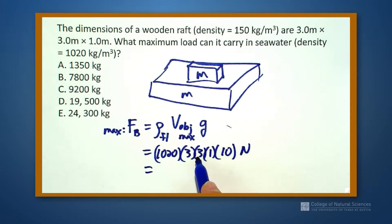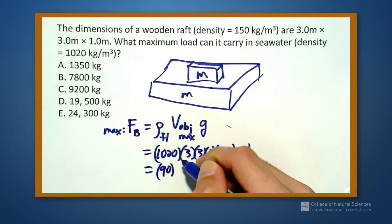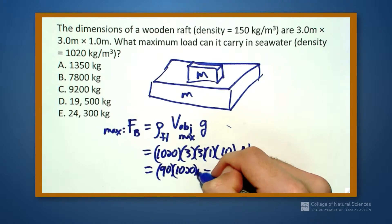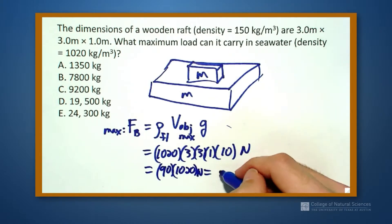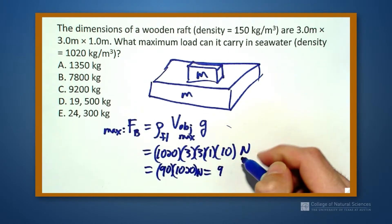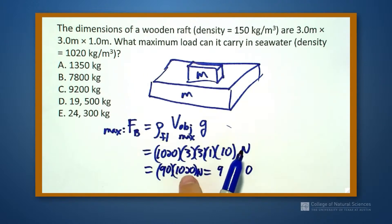So that means that the maximum upward buoyancy force that I get is 3 times 3, so this is 90 times this is going to be 90 times 1,020, which is going to be the same as 91,800.